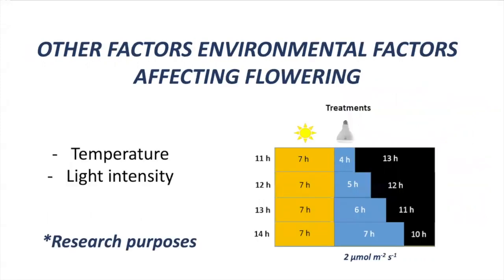There are also other factors affecting flowering, for example temperature or DLI, which is the amount of photons of light that the plant is receiving per day. This is why flowering lamps can be really useful for research purposes. When trying to evaluate a photoperiodic response, it is recommended to extend the period of light artificially under the same temperature between different treatments, also trying to maintain the same DLI. This way you will be able to measure the effect of photoperiod alone on flowering, using a very low light intensity.